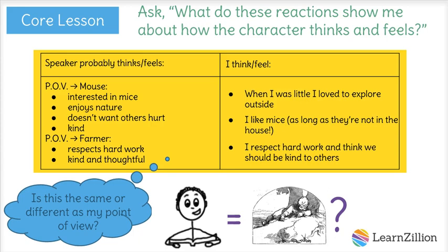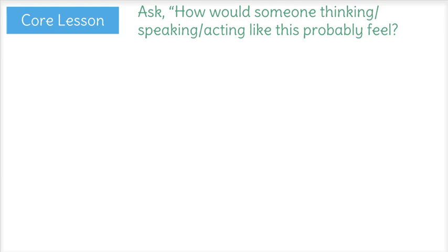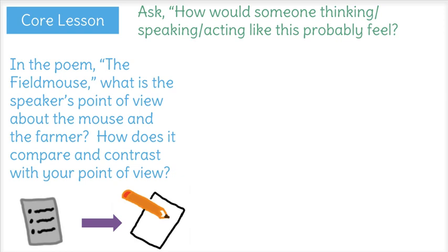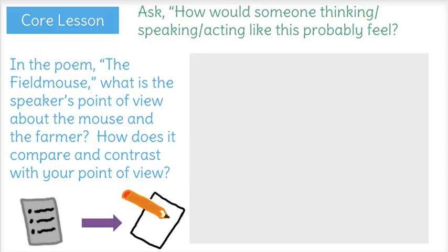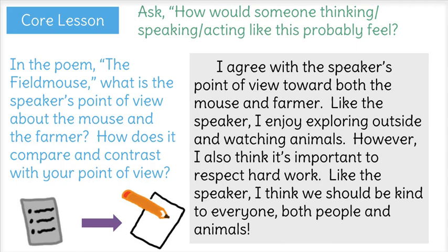So now I'll take all these thoughts and turn them into my written answer. Since I'm actually answering two questions in one, it's a good idea to break up my answer into two paragraphs. The speaker's point of view toward the mouse and the farmer is kind and thoughtful toward both. He wants the mouse to stay safe and have plenty to eat, but he also respects the farmer. He knows the farmer went to great pain to do his job, and he doesn't think the mouse should eat his grain. In my second paragraph, I'll answer the second part: I agree with the speaker's point of view toward both the mouse and the farmer. Like the speaker, I enjoy exploring outside and watching animals. However, I also think it's important to respect hard work. Like the speaker, I think we should be kind to everyone — both people and animals.